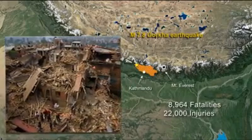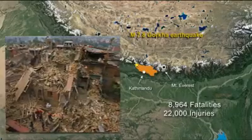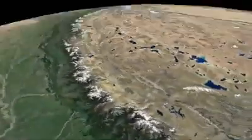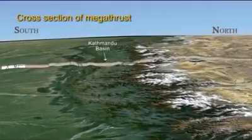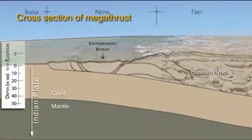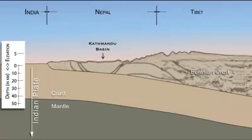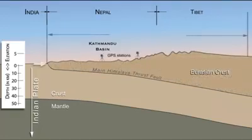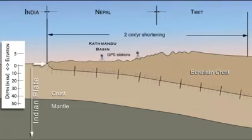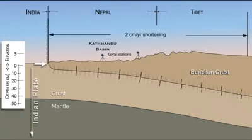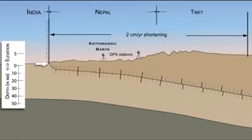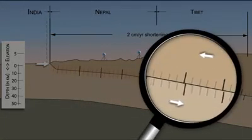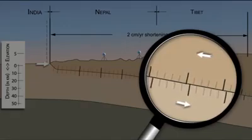To understand the Gorkha earthquake, let's look at a north-south oriented cross section through the Kathmandu basin. Geological studies and seismic imaging reveal a complicated history of faulting and earthquakes in the Himalayas, but here we focus on the active main Himalayan thrust fault. The Indian plate pushes the leading edge of the Eurasian plate northward, shortening the overriding crust by over 2 centimeters per year. On the deeper, low friction part of the plate boundary, this displacement occurs by slow creep, with few earthquakes.